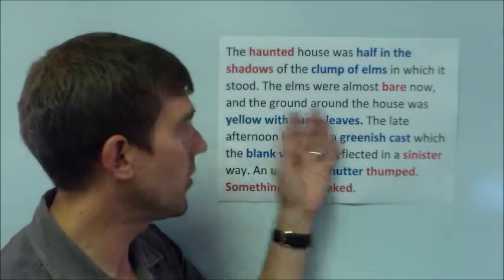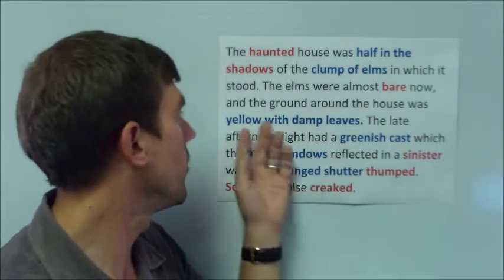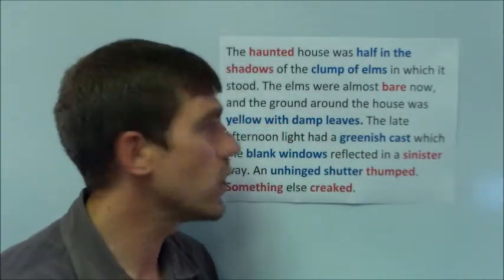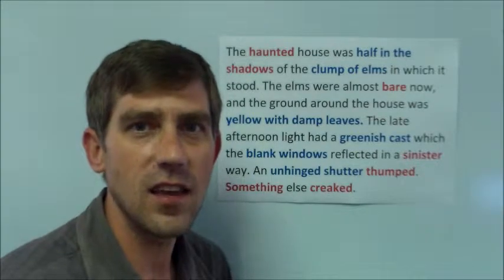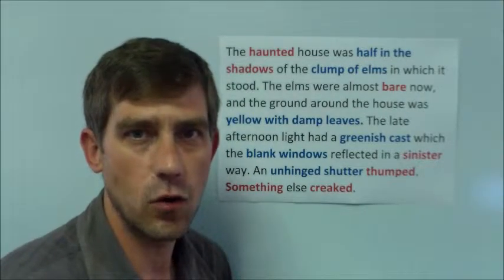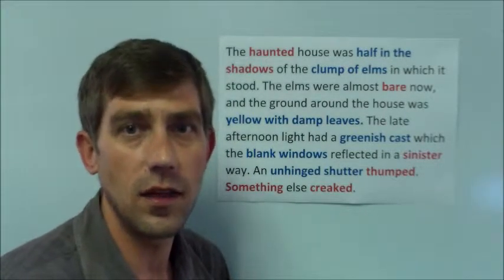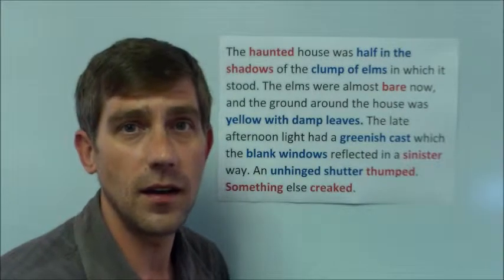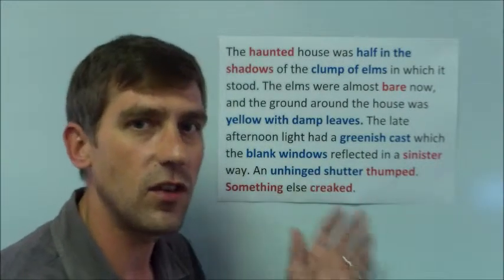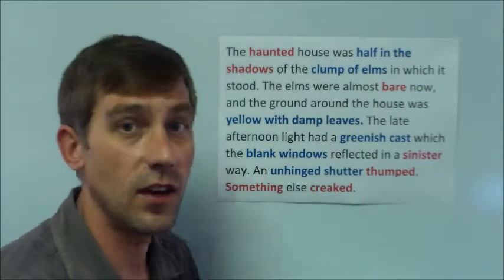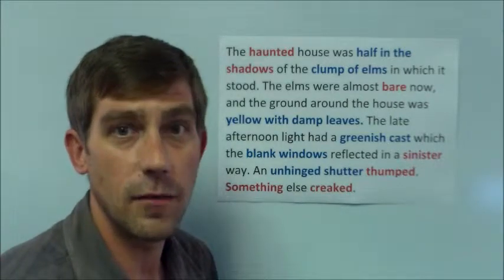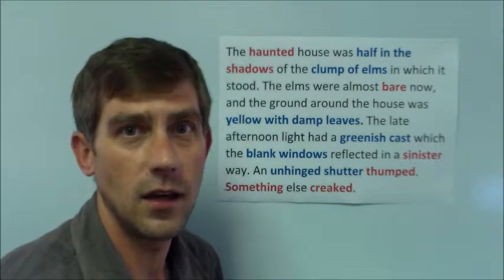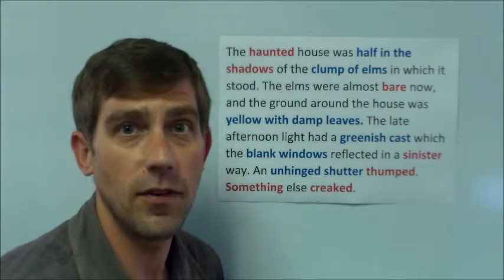Then let's look at these other two that describe the colors: yellow with damp leaves and greenish cast. These are slightly sinister images that are created in the reader's mind and certainly indicate that the narrator — if he's noticing all these details and describing them that way — is frightened of the mystery that he or she is about to face. In fact, let's look at these two scenes.